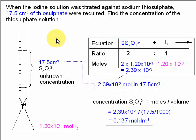The final part says when the iodine solution was titrated against sodium thiosulfate, 17.5 cm cubed of thiosulfate were required to find the concentration of the thiosulfate solution. So here's the titration apparatus. We know the amount of iodine. We don't know the concentration of thiosulfate. So what we're going to do is work out the amount, the number of moles of thiosulfate, then using the volume we can work out the concentration.